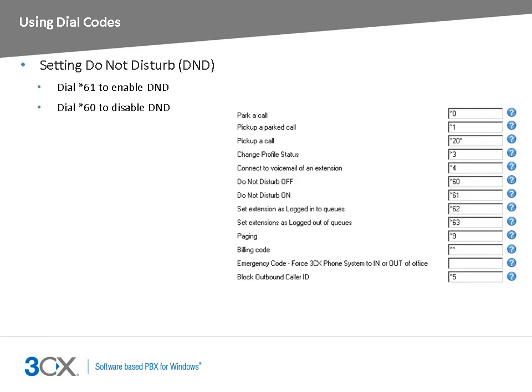One of the most commonly used dial codes is the Do Not Disturb dial code. If you are in a situation in which you cannot take calls, you can switch your extension to Do Not Disturb. Dial star 61 to enable Do Not Disturb for your extension. Dial star 60 to disable Do Not Disturb for your extension and start receiving calls again.